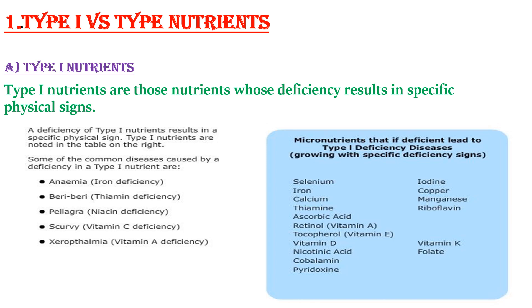So iron, thiamine, niacin, vitamin C, and vitamin A are some of the common nutrients whose deficiency causes specific diseases — those are type 1 nutrients.